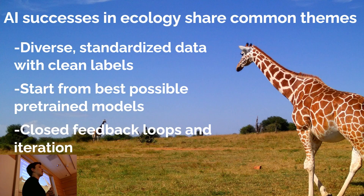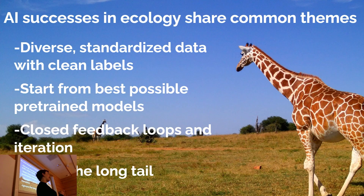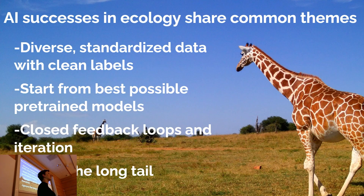Finally, most of these successful AI systems just ignore the long tail — they do not try to predict rare species because it's really hard. Predicting accurately from very limited training data is something AI is not currently reasonably capable of. People publish methods claiming much better performance on the long tail, but better might mean going from 5% to 14% accuracy — still very far from being useful.